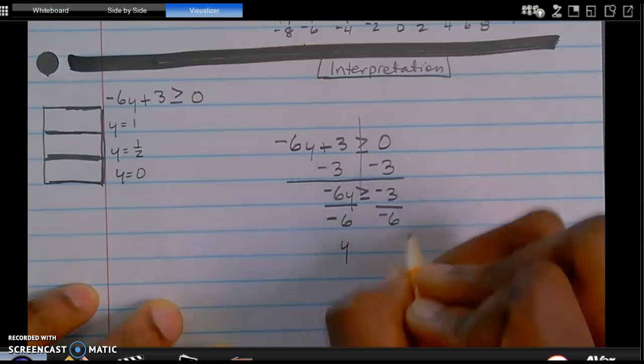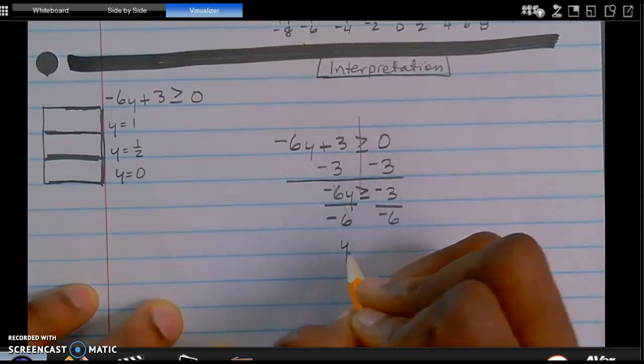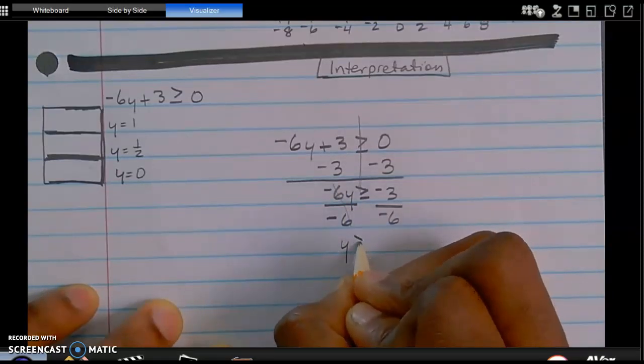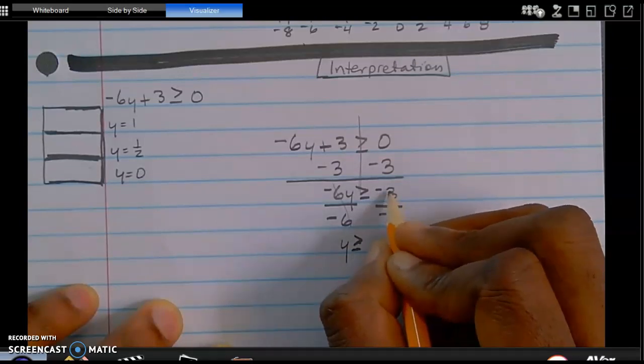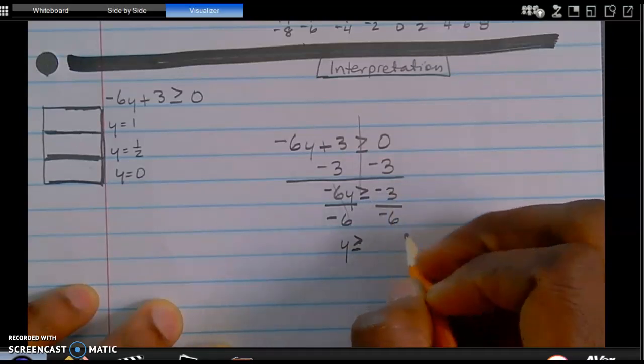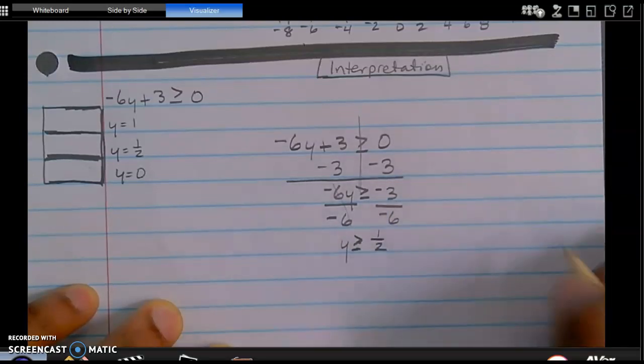So now I have negative 6 divided by 6. They cancel each other out. It becomes positive. So now, greater than or equal to negative 3 divided by negative 6 is going to give me a positive 1 half.